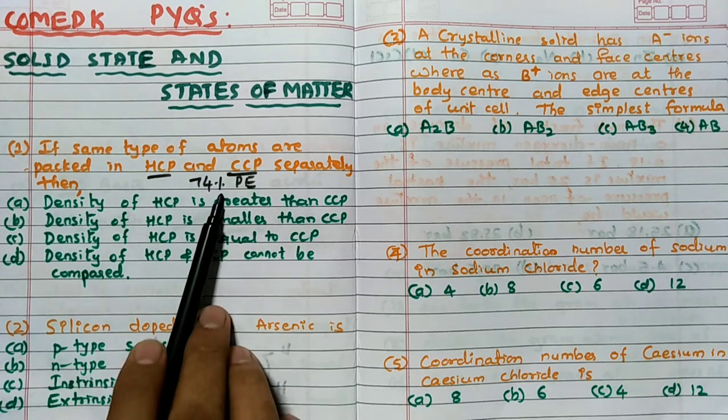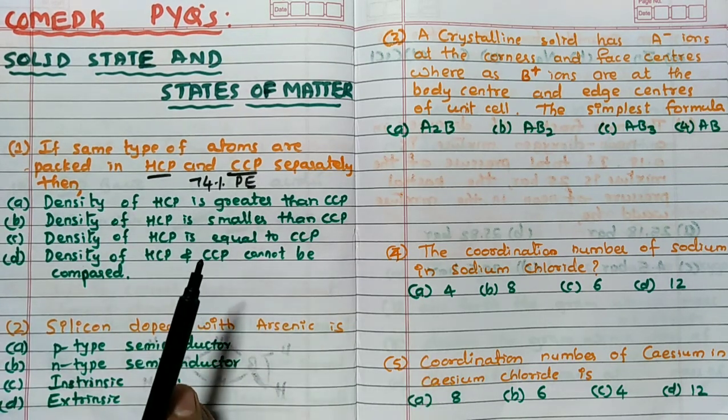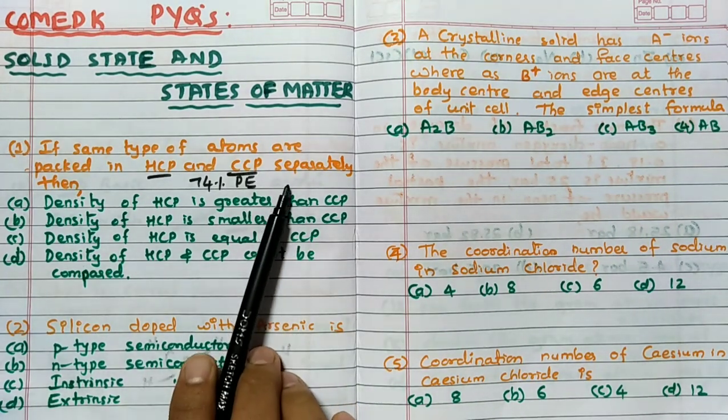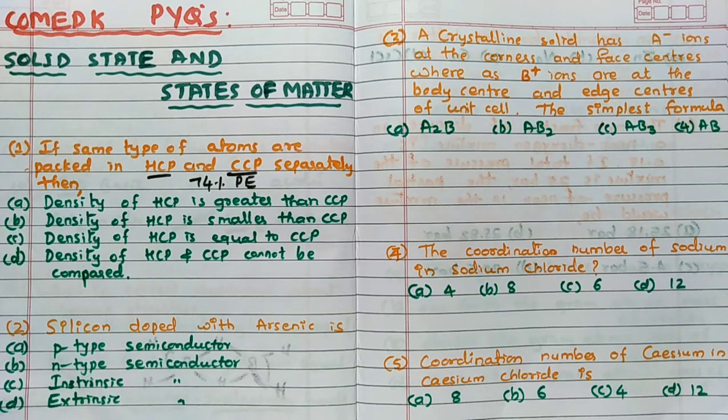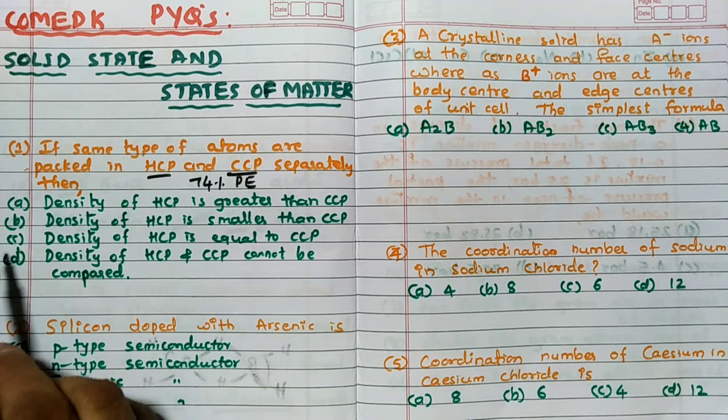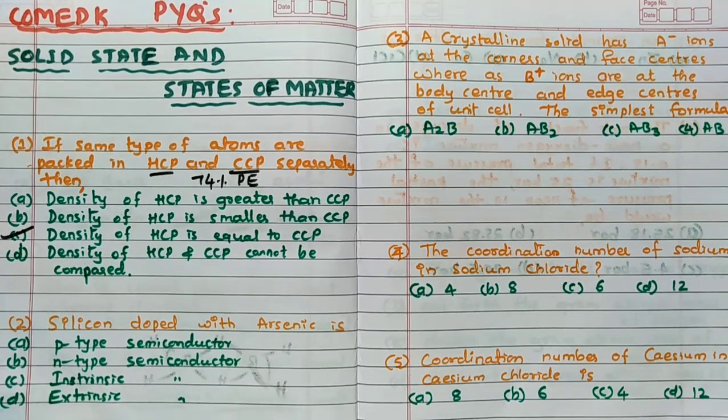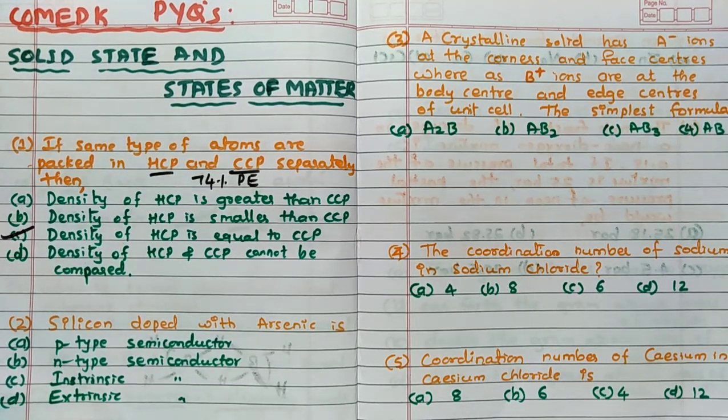When packing efficiency is same, then definitely voids are also same, percentage of voids is also same, unoccupied space is 26%. So hence remember, density always the same for HCP and CCP. The answer for this question is C. Only thing, our basics should be very strong.